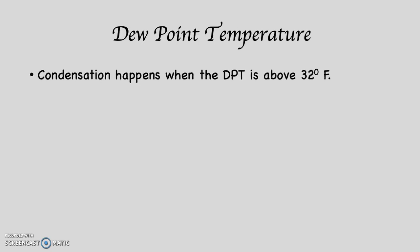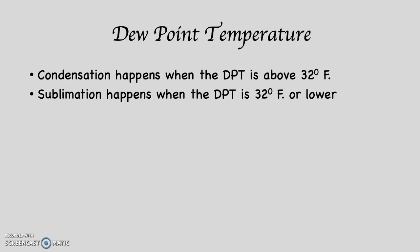Again, with dew point temperature: if the dew point temperature is above 32 degrees Fahrenheit and the relative humidity reaches 100%, condensation will occur — meaning gas to liquid. However, if the dew point temperature is 32 degrees Fahrenheit or lower and the air saturates, sublimation will occur — meaning gas to solid. This is also called deposition, depending on your terminology, but sublimation or deposition, either one applies.